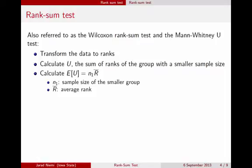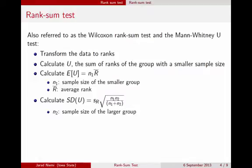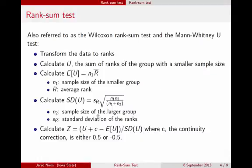The next step is to calculate the standard deviation of the statistic U, given by this formula, where N2 is the sample size of the larger group, N1 is the first group, and SR is the sample standard deviation of the ranks. Once you have these three quantities, you calculate the test statistic Z, which is U minus what we expect to see divided by the standard deviation of U — normalizing onto a standard normal scale — with an additional factor C, the continuity correction. The continuity correction is either adding 0.5 or subtracting 0.5, and pragmatically we can try both and choose the one that leaves the larger p-value.